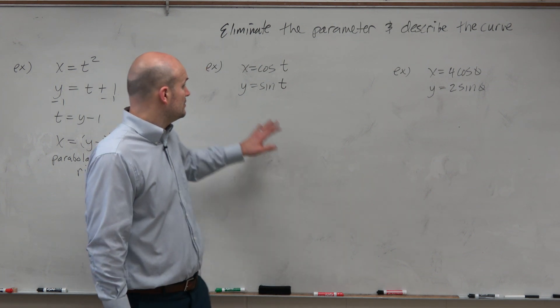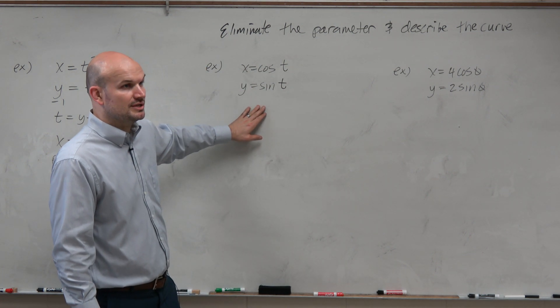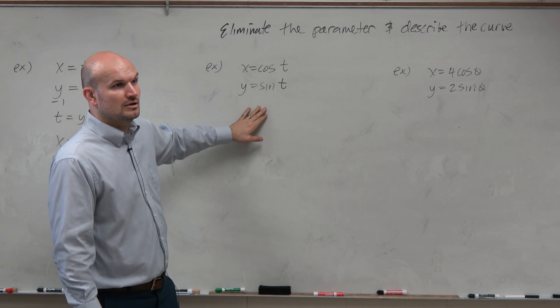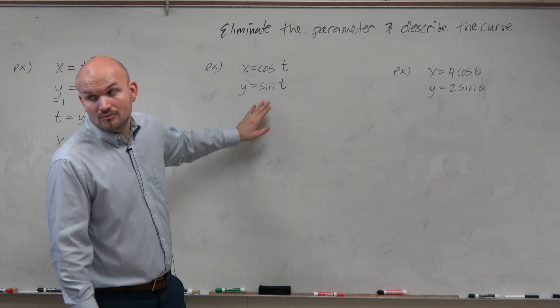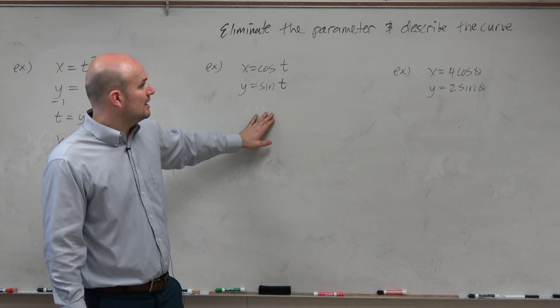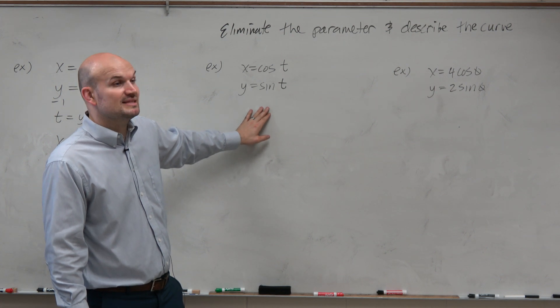Well, there is one thing that we do know. How is cosine and sine related to each other? Well, one thing we could look at is the Pythagorean identity.